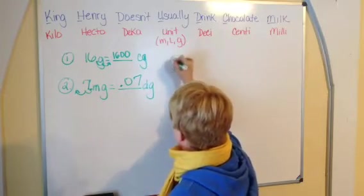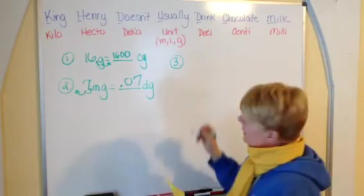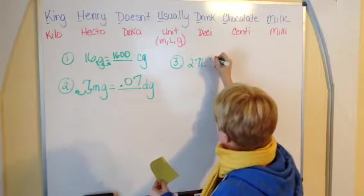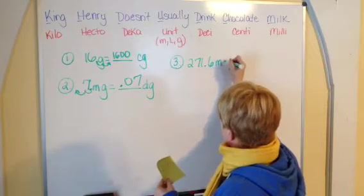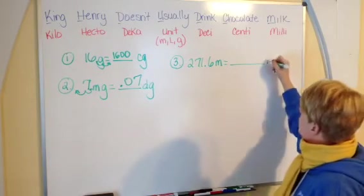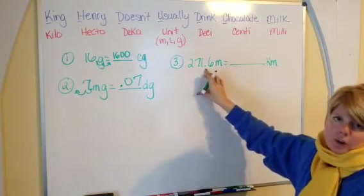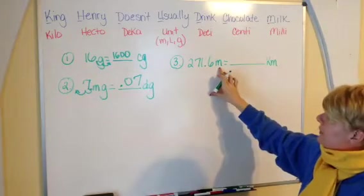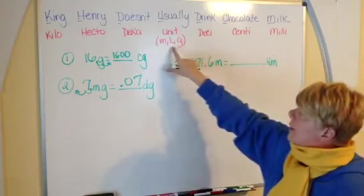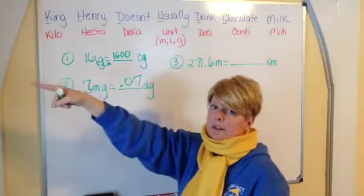Number three, let's go ahead and add in a decimal in the problem. So let's say that we have 271 and 6 tenths meters. And we want to find out how many kilometers that is. What you're going to do, since there's already the decimal point, that's what you're going to use. So you're going to go ahead and put your finger on meters, which is right here, and you're going to travel to kilometers. That is one, two, three places to the left.